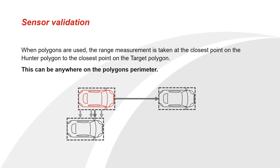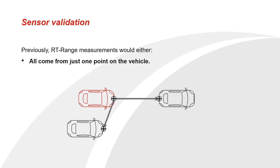This would show that the RT Range measurements can actually be output from anywhere on that polygon, and it's not always clear exactly where on the polygon those measurements are going to be coming from. For example, in this scenario where you have a target pulling up alongside the hunter vehicle, the closest point between those two polygons can be anywhere between where those polygons overlap in the longitudinal direction. So at any time you always have the closest distance from hunter to target, but if you care about the distance from a particular point, you'd have to use this previous method and you'd only be able to use one point on the vehicle.